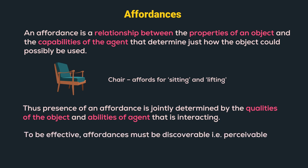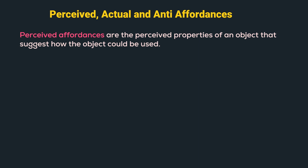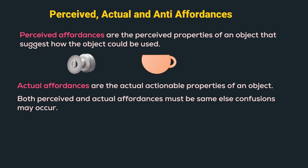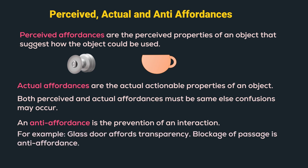To be effective, affordances must be discoverable, i.e. perceivable. Perceived affordances are the perceived properties of an object that suggest how the object could be used. For example, a knob suggests we can open the door by turning it left or right, and a handle on a cup suggests it affords lifting. Actual affordances are the actual actionable properties of an object. Both perceived and actual affordances must be the same, else confusion may occur — for example, if a door with a handle slides instead of being pushed or pulled. An anti-affordance is the prevention of an interaction; for example, a glass door affords transparency but blocks the passage of air or a person passing through it.